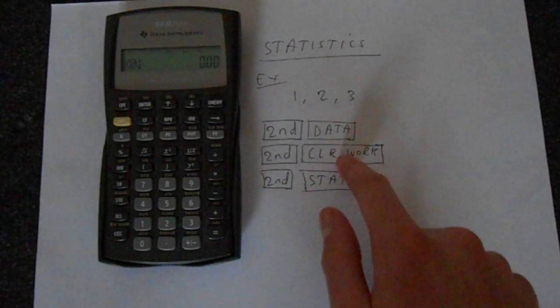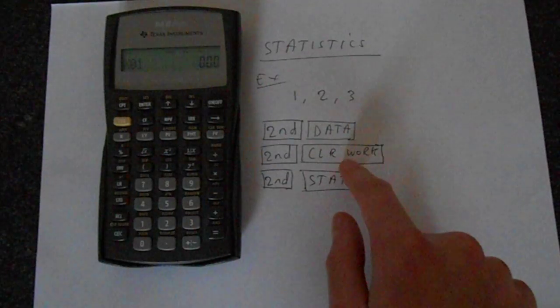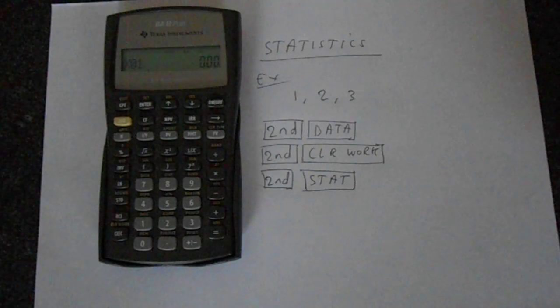And this is already cleared but if you need to clear it and you should always make sure it's cleared, you go second function and then clear work is down the bottom left hand corner. And that clears everything that's entered in there.